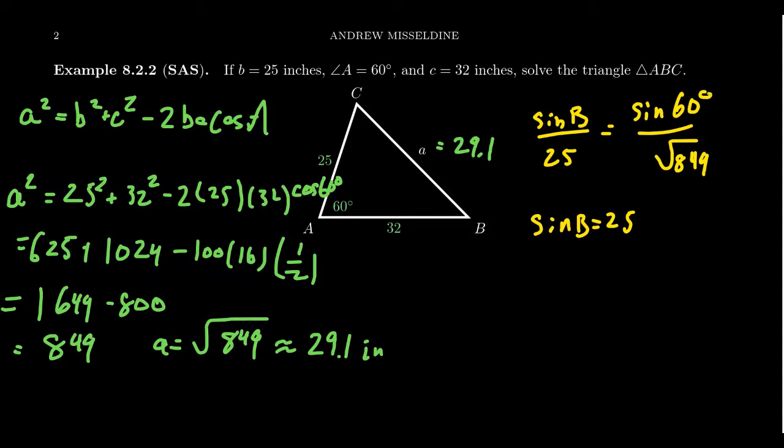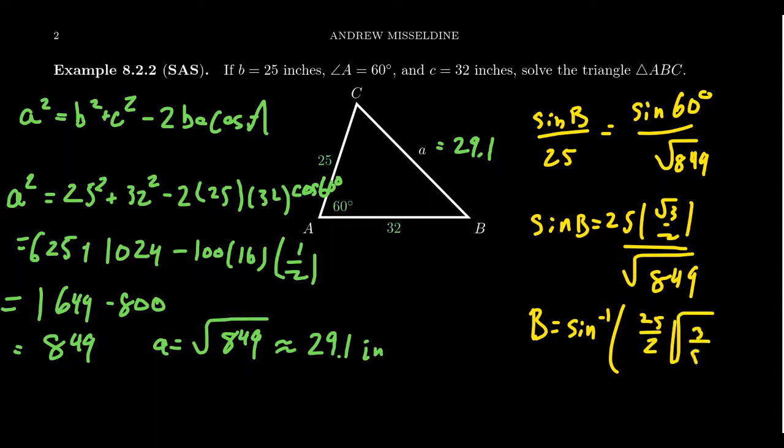Sine of 60 degrees is going to equal root 3 over 2, and then we have this square root of 849 in the denominator. This would then give us that angle B is equal to arc sine of 25 over 2 times the square root of 3 over 849, which you can reduce that fraction down if you want to, but we're just going to throw this all in the calculator anyways. Not a big deal. You would get approximately, if you round to the nearest tenth of a degree, you'd get approximately 48.0 degrees for B, like so.